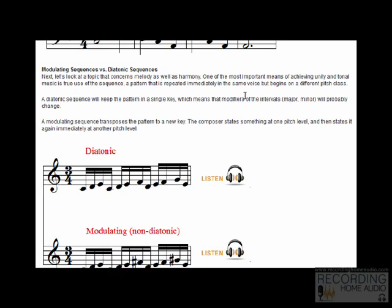A diatonic sequence will keep the pattern in a single key, which means that it modifies the intervals—major and minor will probably change. A modulating sequence transposes the pattern to a new key. The composer states something at one pitch level and then states it again immediately in another pitch level. So these are two completely different sounds, the first one being diatonic, the second one being modulating, which is also known as non-diatonic.